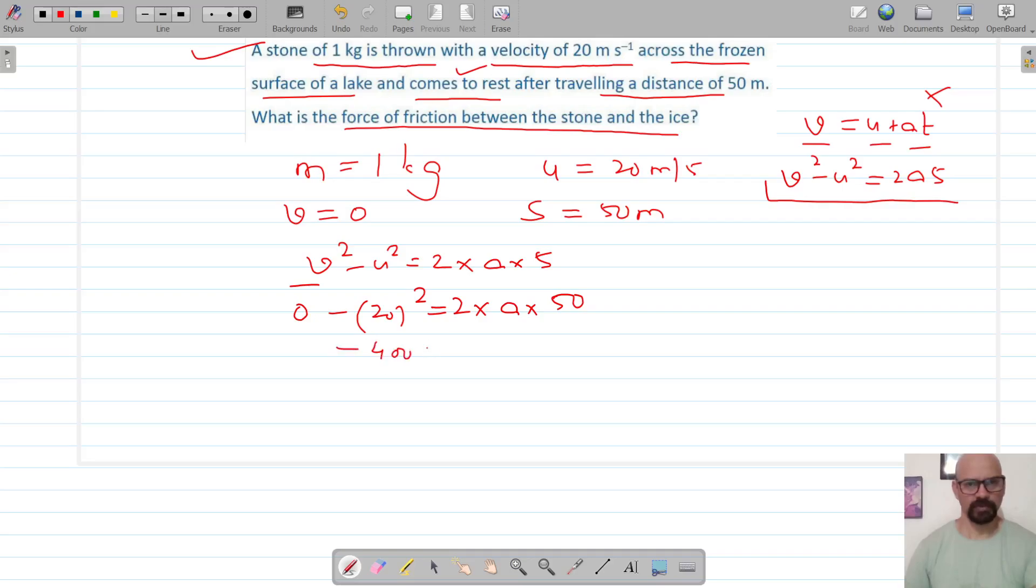So this is minus 400 which is equal to 100 into a. This gets cancelled, so this is minus 4 and acceleration is equal to minus 4 meters per second squared.